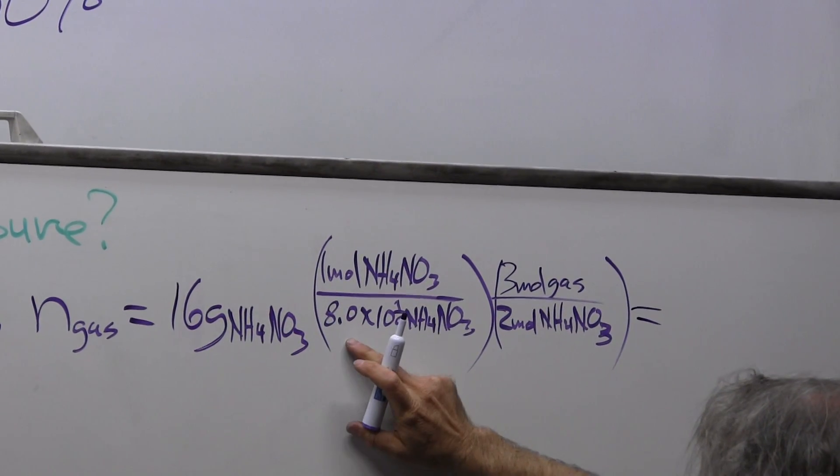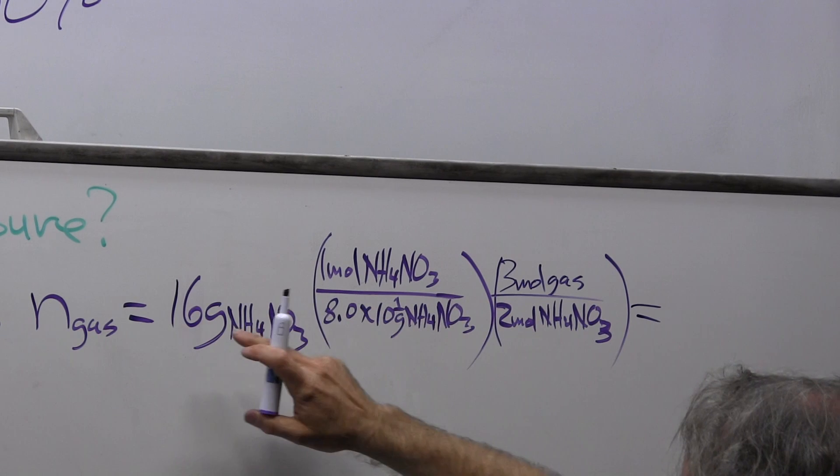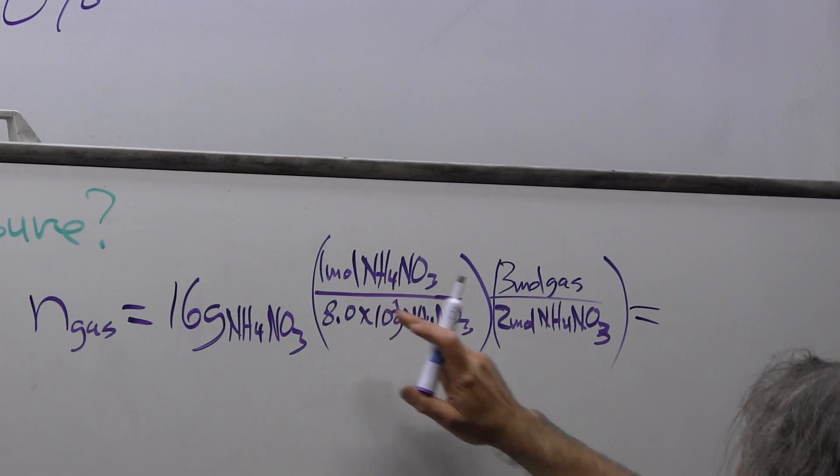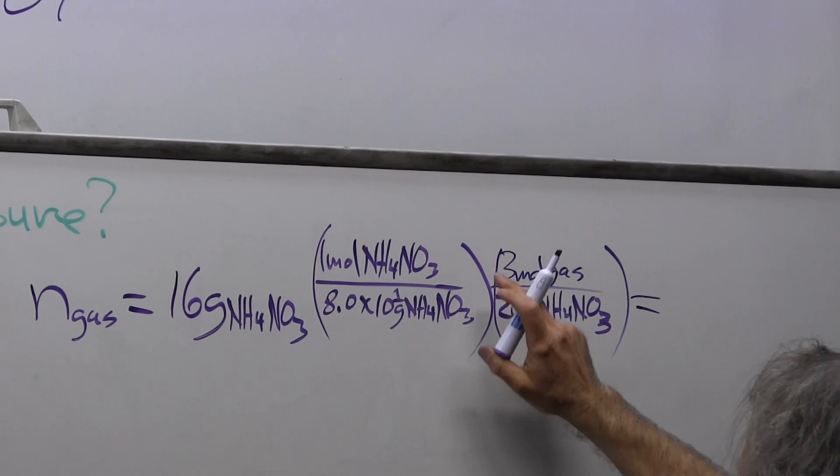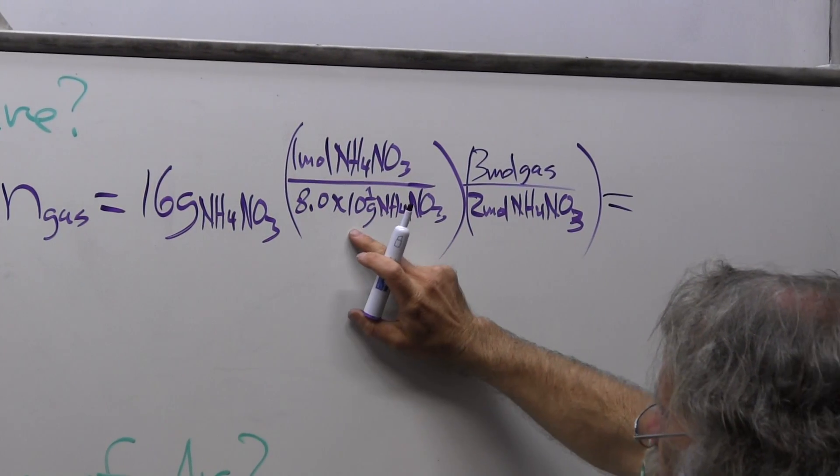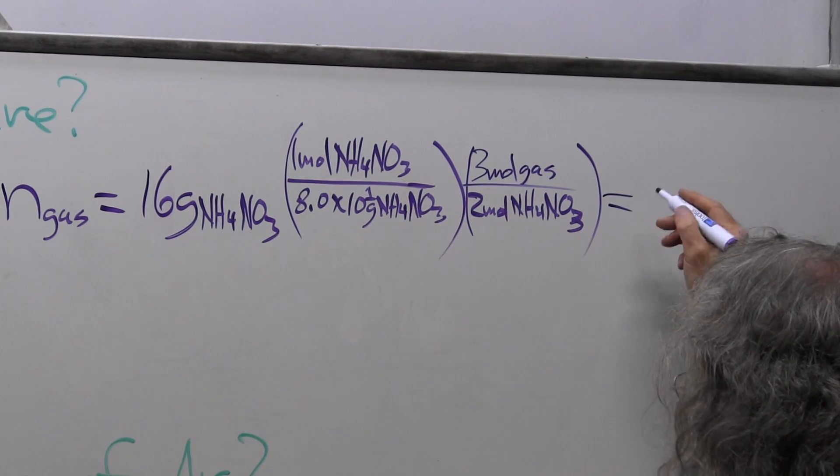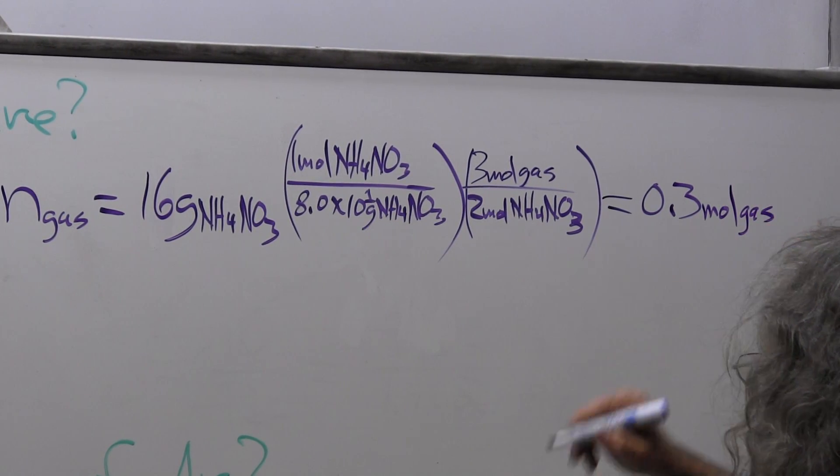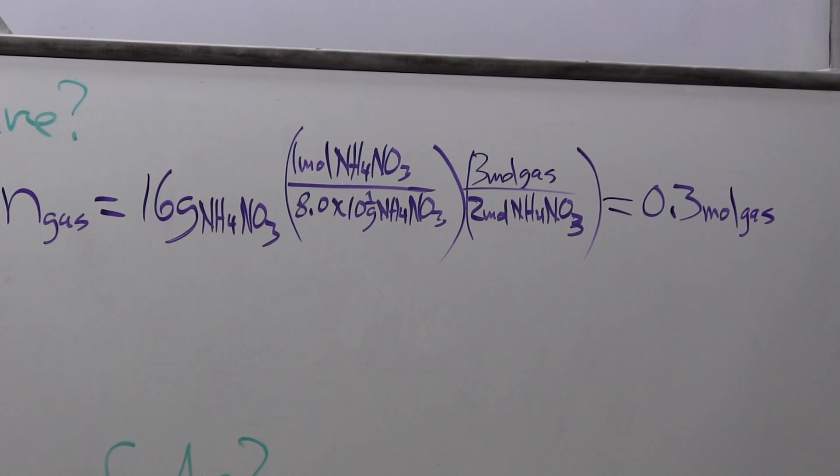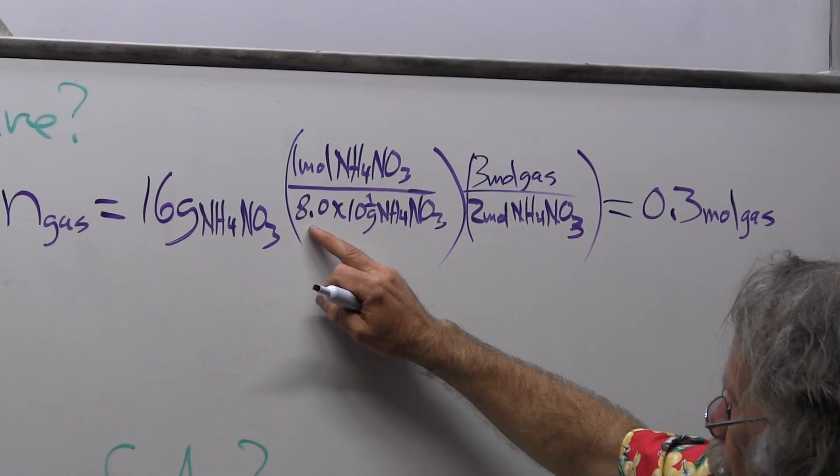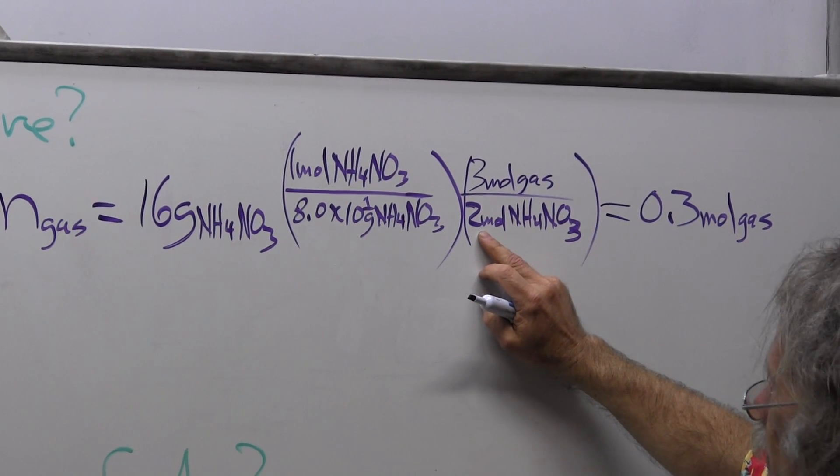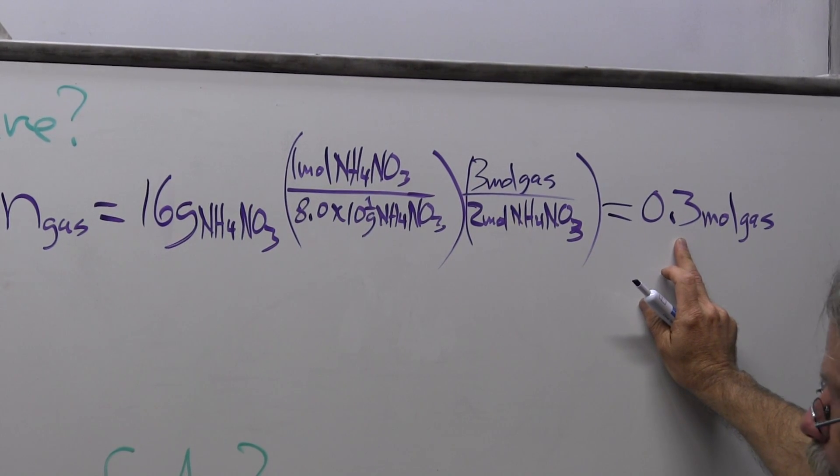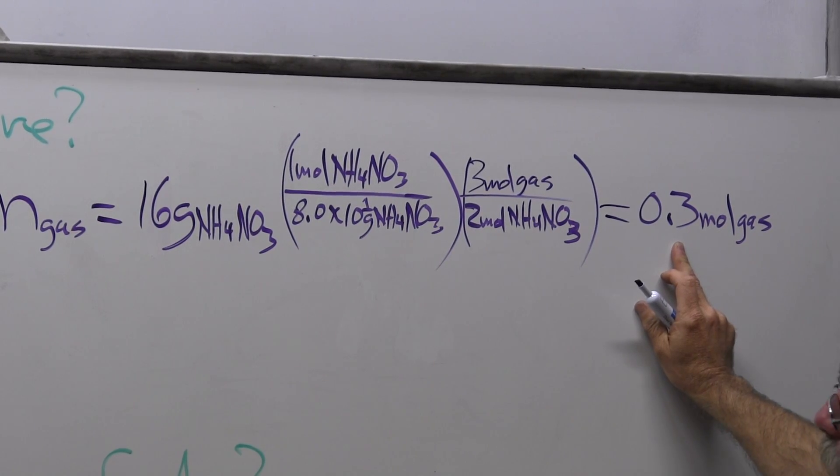Now that's enough information to answer this question. So I have 16 divided by 8, which is 2, and then 2 divided by 2 is 1, 1 times 3 is 3. So I have 3 divided by 10, so it's 0.3 equals 0.3 moles of gas. Let's go through that one more time. 16 divided by 8 is 2, 2 divided by 2 is 1, 1 times 3 is 3, 3 divided by 10 is 0.3. That part of the calculation should be pretty simple if you sit back and look at it.